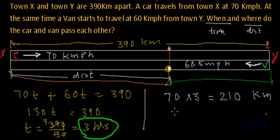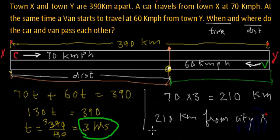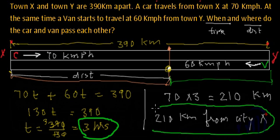So this meeting point will be 210 kilometers from city X. Right? So the cars will pass each other at a point 210 kilometers away from city X on the way to city Y.